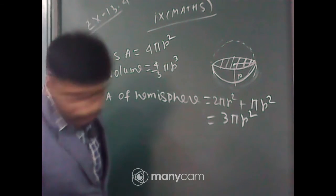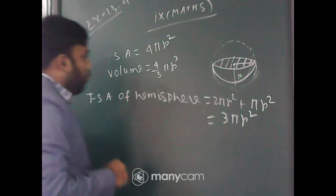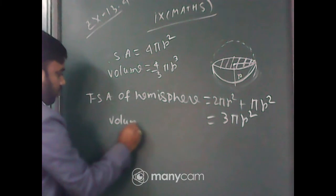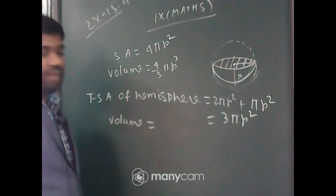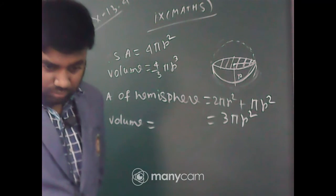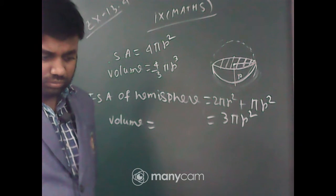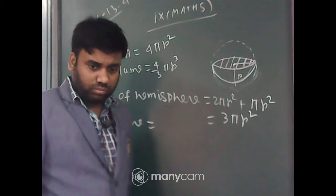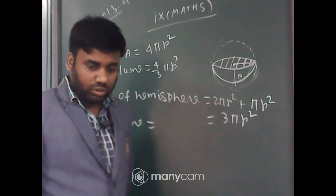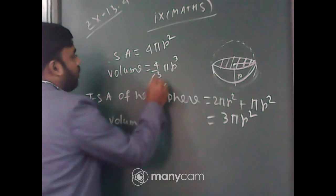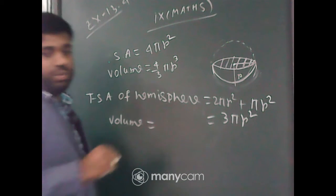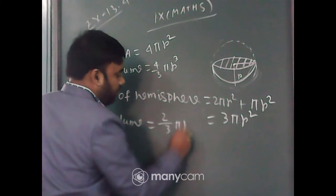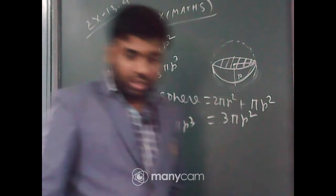Now, volume, what about the volume? Volume is 4 third pi R cube, half of 4 third pi R cube is 2 third pi R cube. Got it everyone?